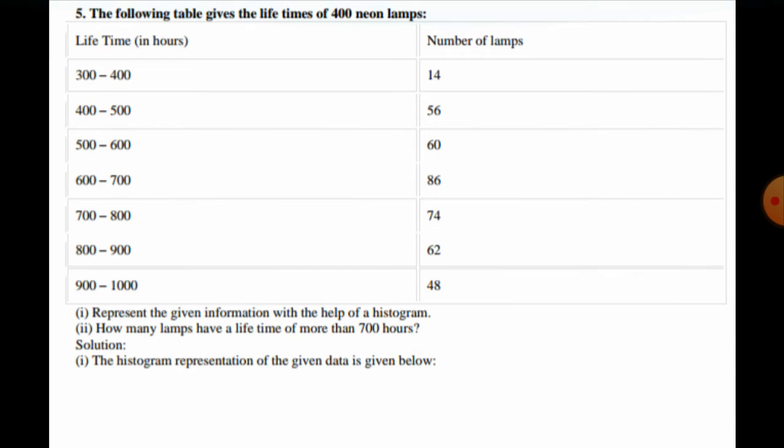In question number five, we have the lifetime of 400 new lamps given in the following table. The lifetime intervals and number of lamps are: 300–400: 14, 400–500: 56, 500–600: 60, 600–700: 86, 700–800: 74, 800–900: 62, and 900–1000: 48.